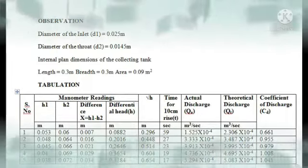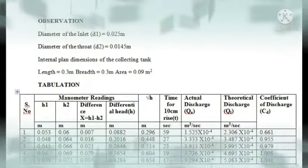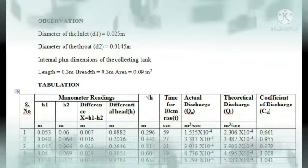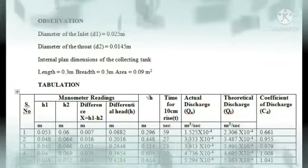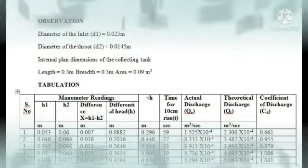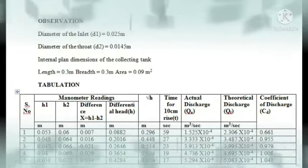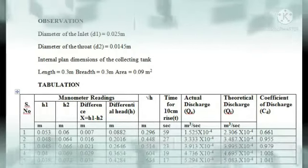These are the observed values. The diameter of inlet is observed as 0.025 meters. Diameter of the throat of the venturimeter is observed as 0.0145 meters. And the length, breadth, and area of the tank is also observed.